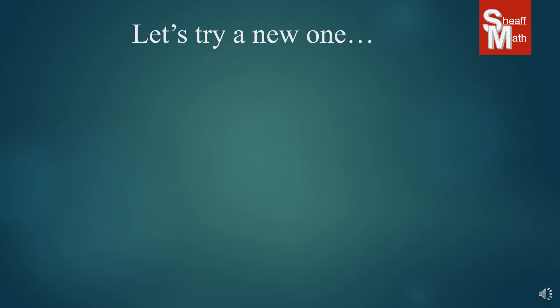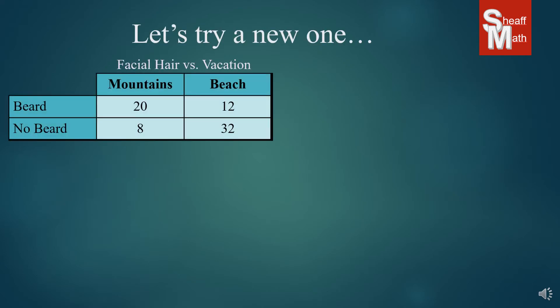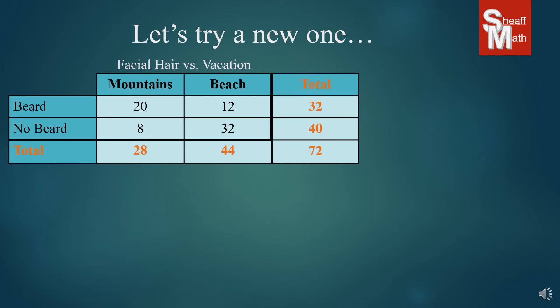All right, let's try a new one. Suppose you had this one, and this one is about a survey about whether men preferred the mountains or the beach for vacation and whether they had a beard or not. So I always will tell you to put in your total row and column to add up the rows, columns, and the grand total.